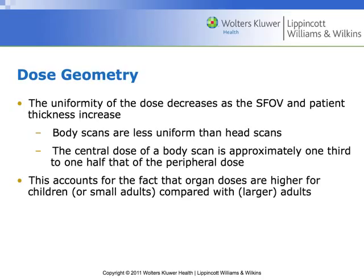Body scans are going to be less uniform than head scans. A head is a fairly uniform thing — basically bones with skin over it. But when we get down into the abdomen, we've got all sorts of complex structures going on, so it's going to affect the uniformity of that dose considerably.